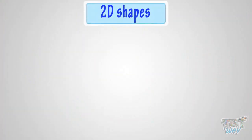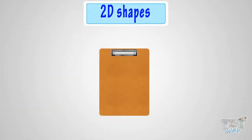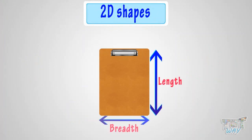2D shapes are also called flat shapes because they have exactly two dimensions: length and width, or height and width.